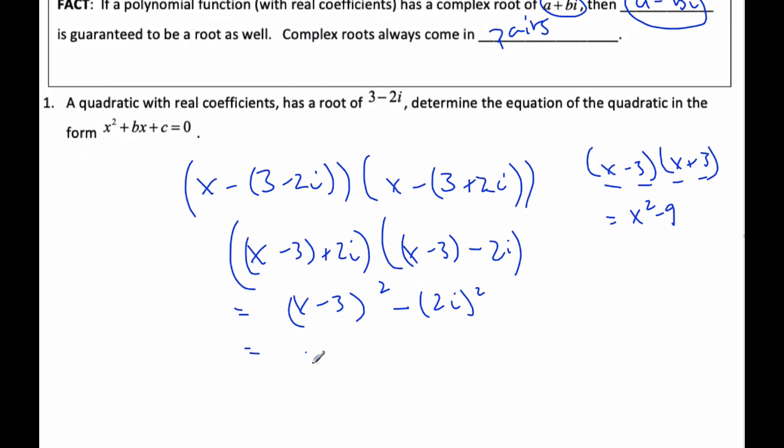And so expanding this out, I get x squared, double the product, I get negative 6x plus 9 minus, well, this is 4i squared, which is going to be x squared minus 6x minus 1, makes it plus 4, makes it 13, so this is the quadratic.